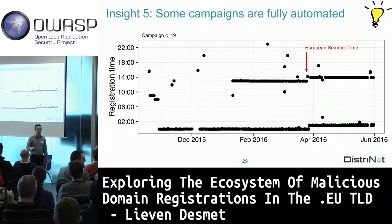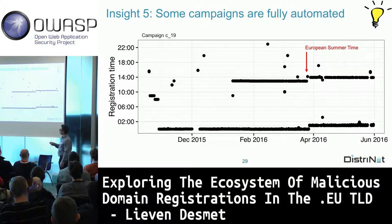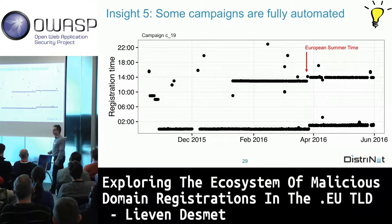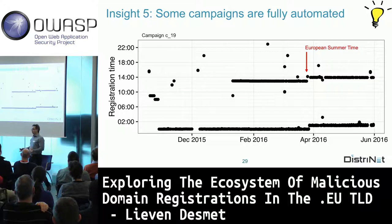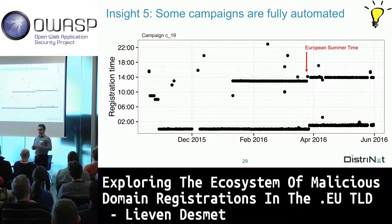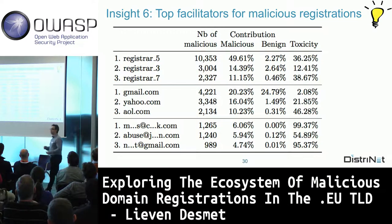Some actors do think about automation: one campaign does a low number of registrations per day but always at the same hours, running from January onwards twice a day—this looks like a cron job. When European summertime shifted our clocks, their timestamps stayed fixed, confirming automation. But not all actors automate: we found typing mistakes in registration information and domain names, suggesting some manually type registrations from a list, perhaps because it's cheaper than automating.